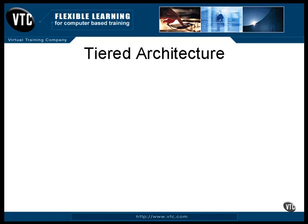J2EE is a set of tools for creating software systems in a tiered architecture. This isn't anything radical or difficult — it's just an approach to building software in such a way that it's more flexible and it's easier to maintain.